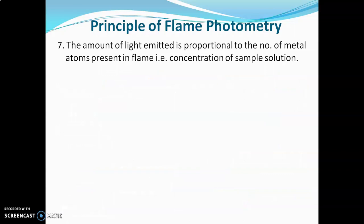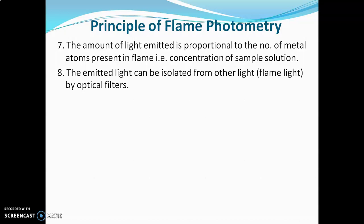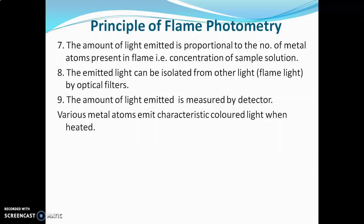The amount of light emitted is proportional to the number of metal atoms present in the flame, which means the amount of emitted light is directly proportional to the concentration of the metal atom in the sample solution. The emitted light can be isolated from other light — such as the flame background — using optical filters or monochromators. The amount of light emitted is then measured by a detector.